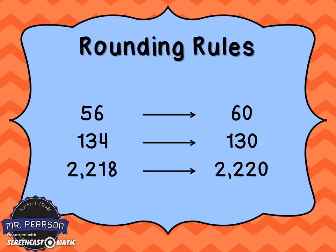56 is closer to 60. 134 — because we circled the 4, we're going to round that to 130. It's closer to 130. And in 2,218, we're going to round that to 2,220.